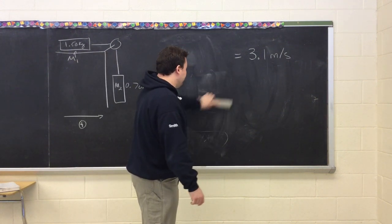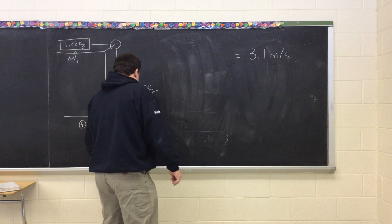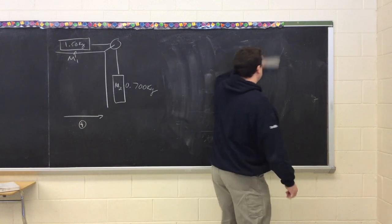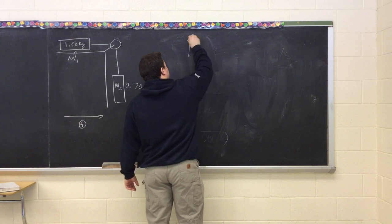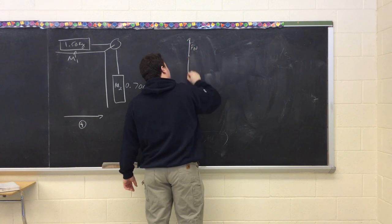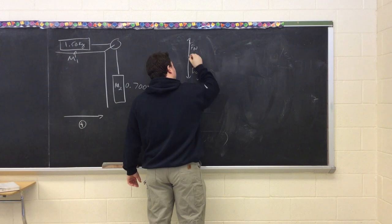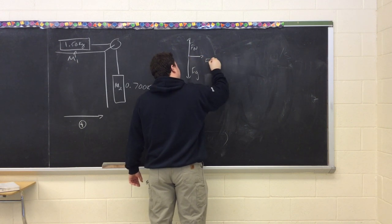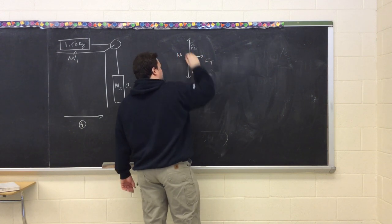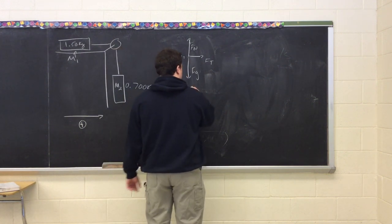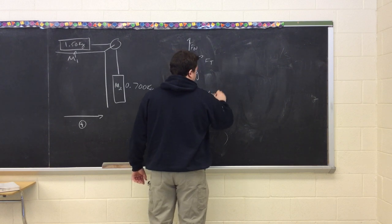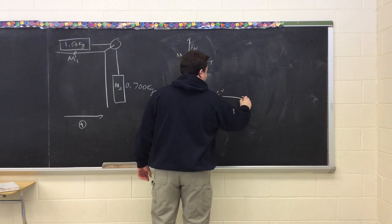Now if we went back to our free body diagram, we said that Fn, Fg1, and Ft, and this is our mass 1. Remember we have an acceleration equal to 3.1 meters per second squared in that direction.